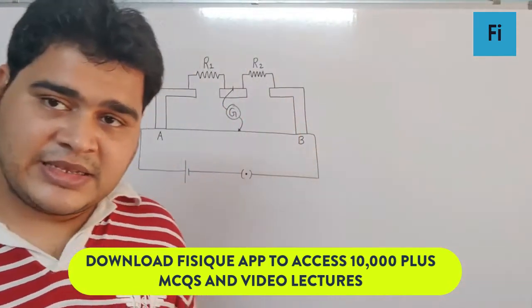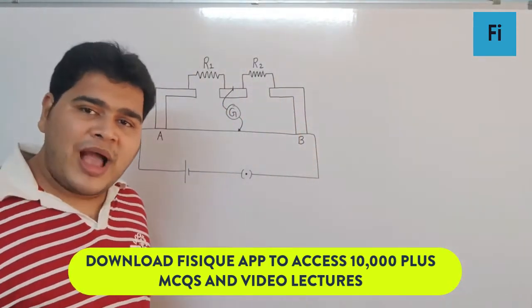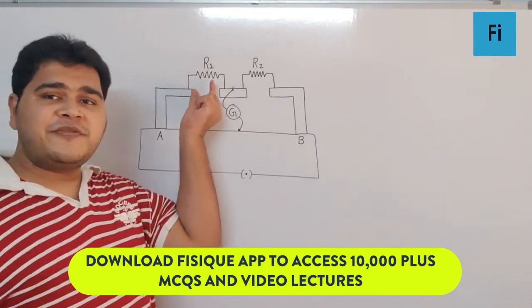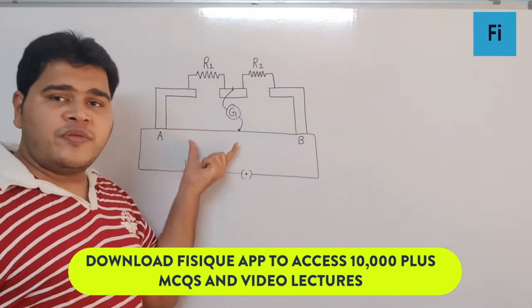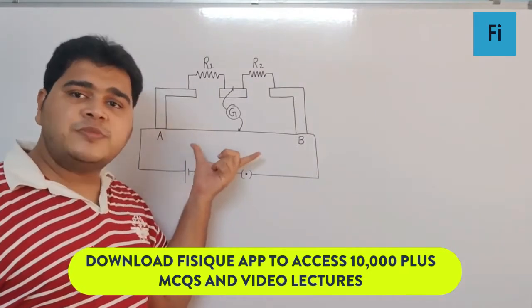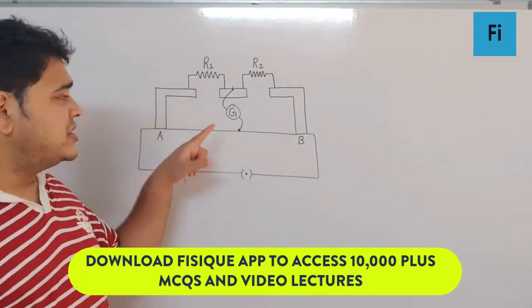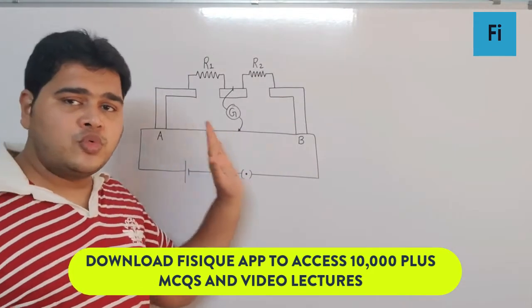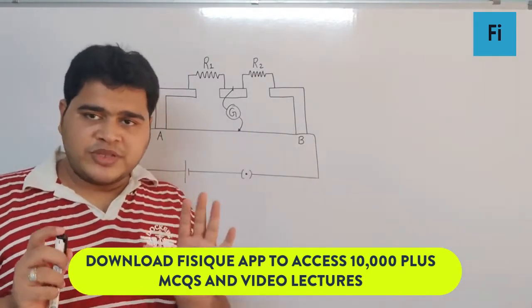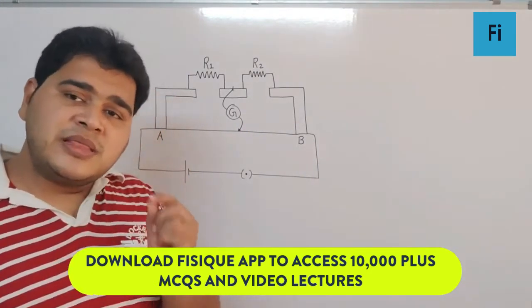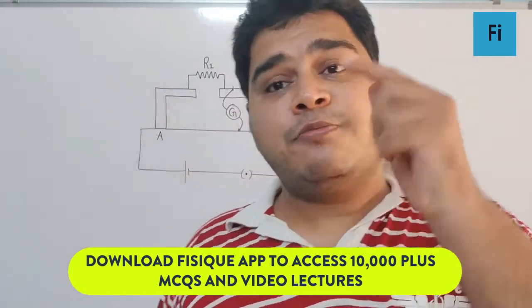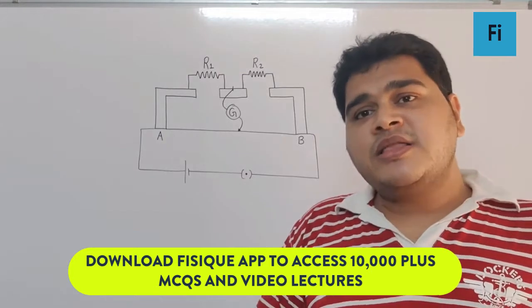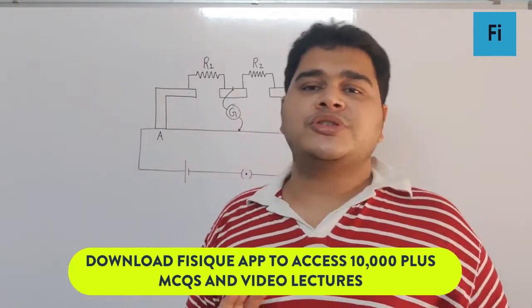When you have the resistance on the left gap increased by 10 ohm, the length over there will also increase by 10 centimeters, which means the null point will shift towards B. Now we want to connect a resistance in parallel with R1 plus 10 such that the null point comes back to its original position.